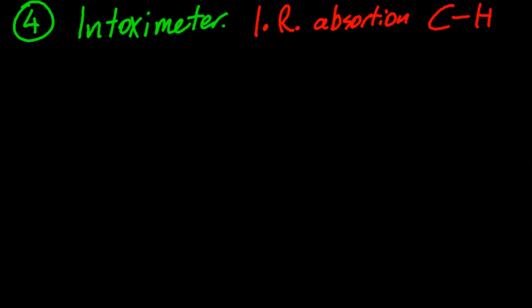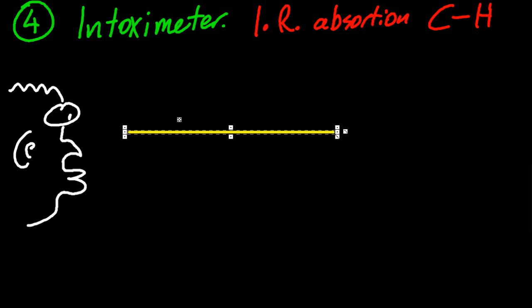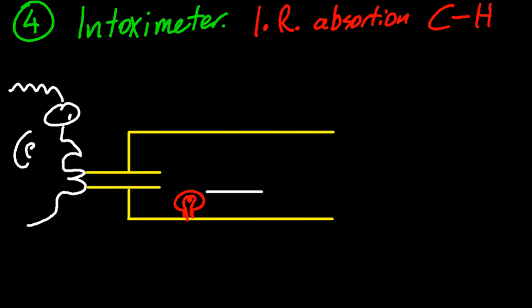Number four is an intoximeter. There are two sorts of intoximeter you need to know how to use, or the theory behind them. The first is an infrared absorption intoximeter. It works on the carbon-hydrogen bond that's present in alcohol. Let me just draw out an extremely simple schematic of an intoximeter.